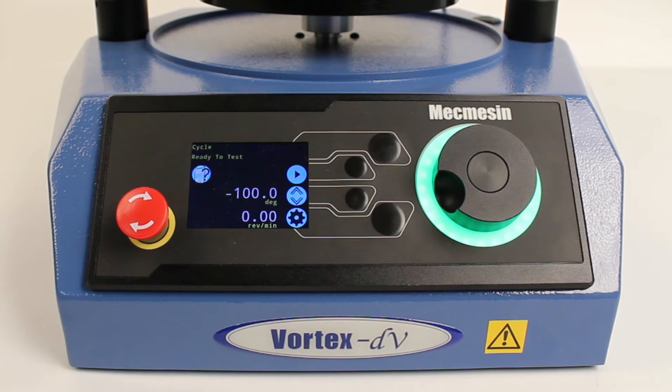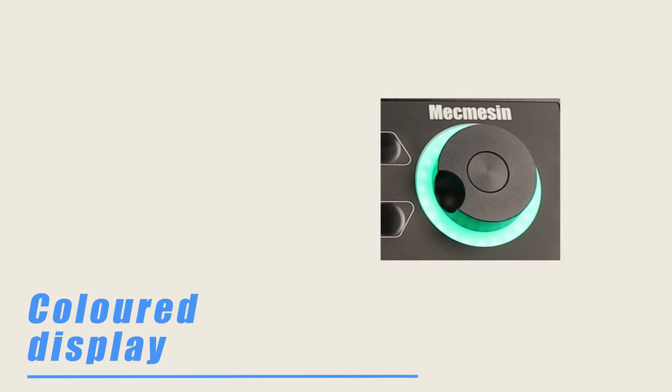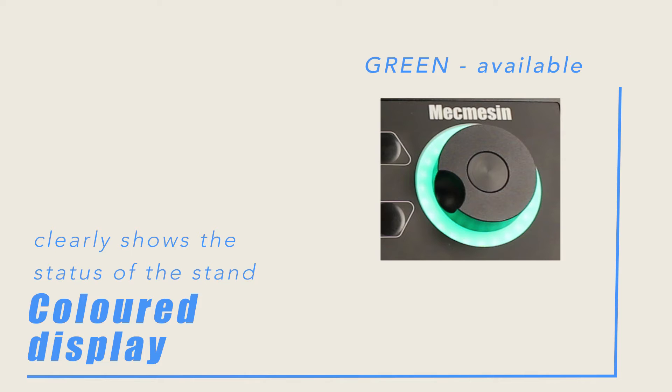The coloured display shows clearly the status of the stand. Green for available, amber for setup or running, or red for a fault condition.